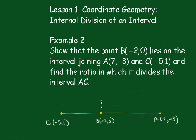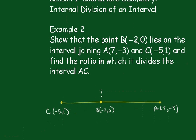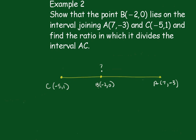Example 2. Show the point B(-2, 0) lies on the interval joining A(7, -3) and C(-5, 1), and find the ratio which it divides the interval AC. Now, I'll put a question mark here because we're not sure that it does lie on that line. But what I'll do, I'll look at the gradient of BC.